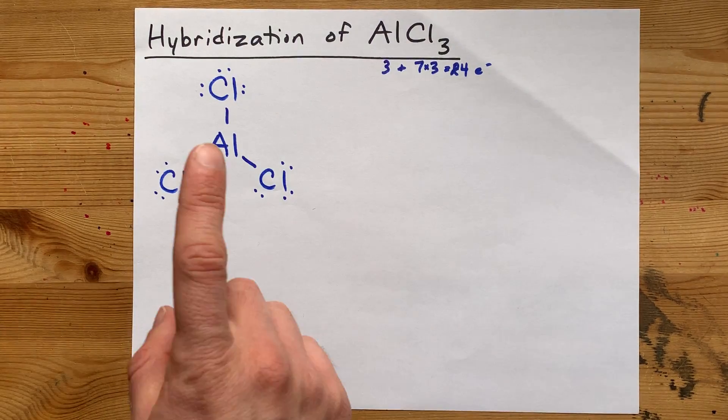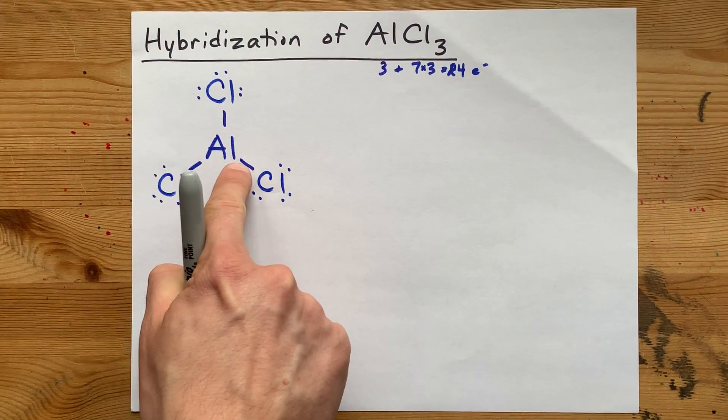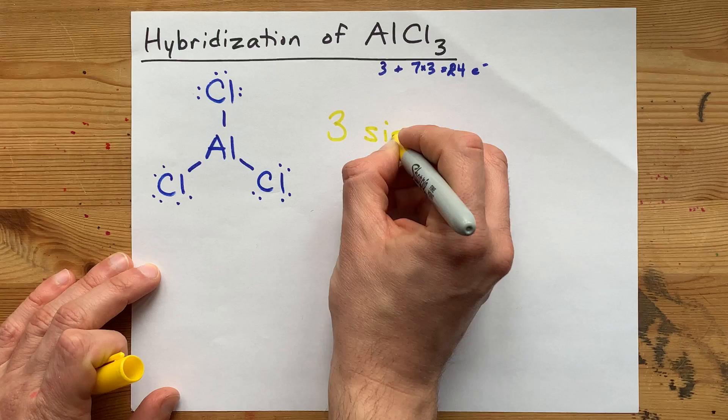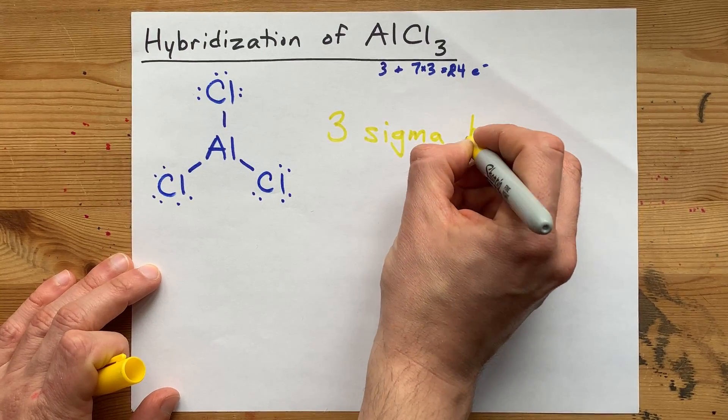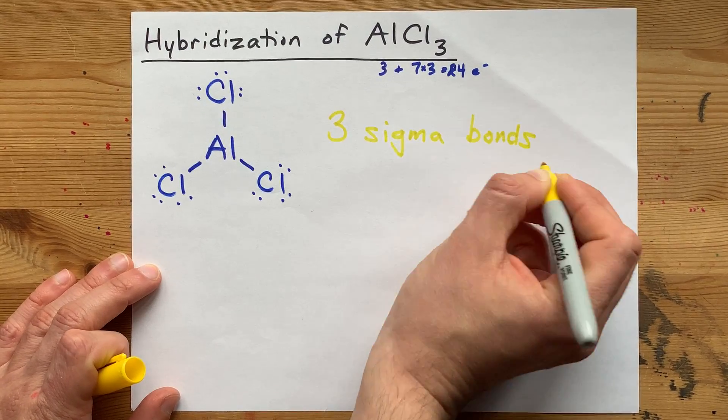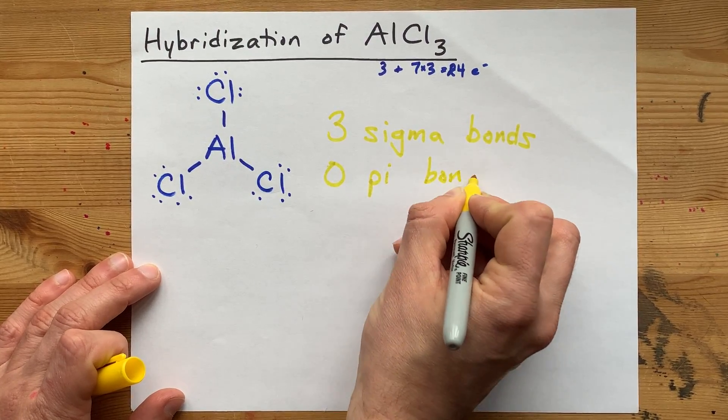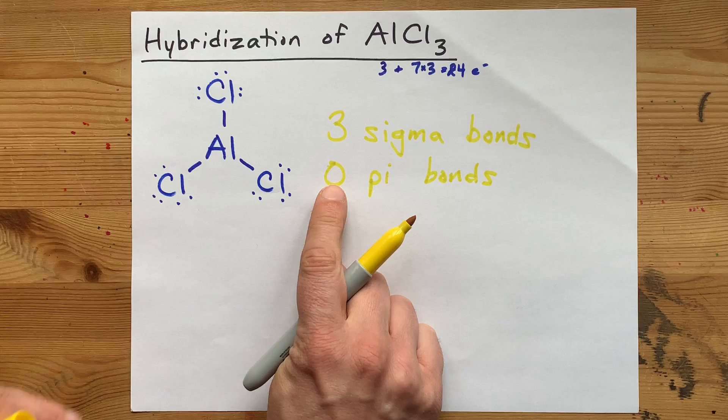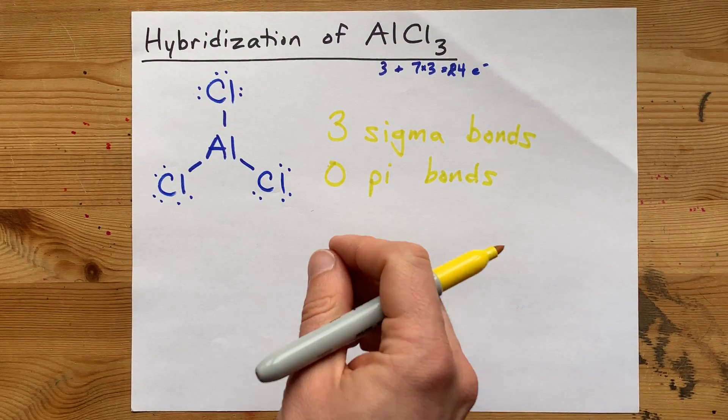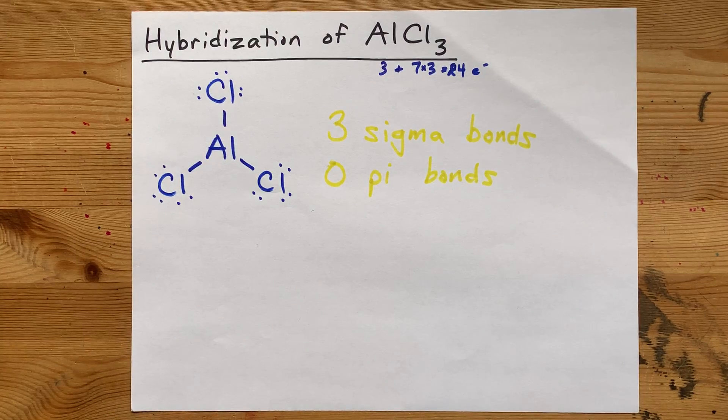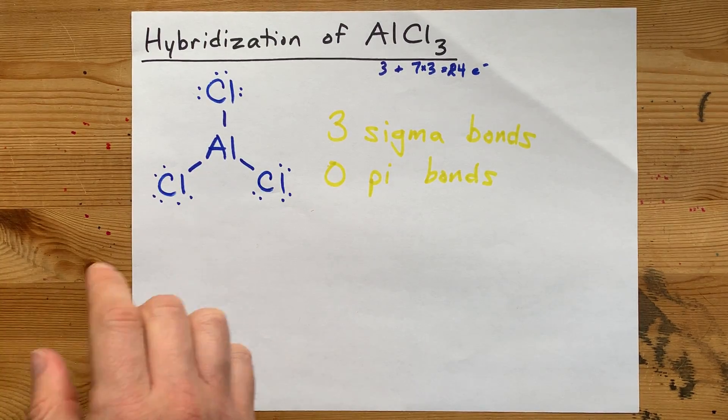Why is that significant? Here you go. You have one, two, three sigma bonds. And by sigma bonds, I mean single bonds. And you have no pi bonds. The fact that there are no pi bonds often leads you to believe it's sp3 hybridized.